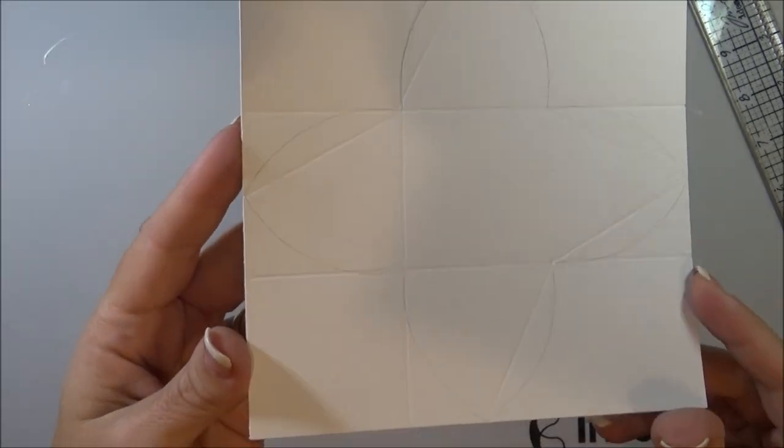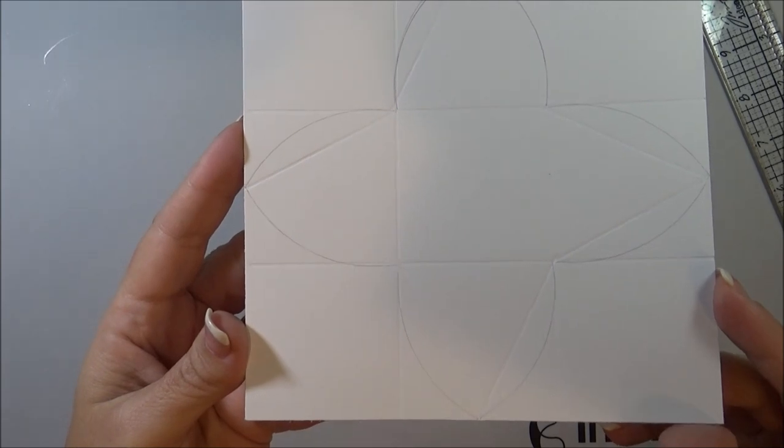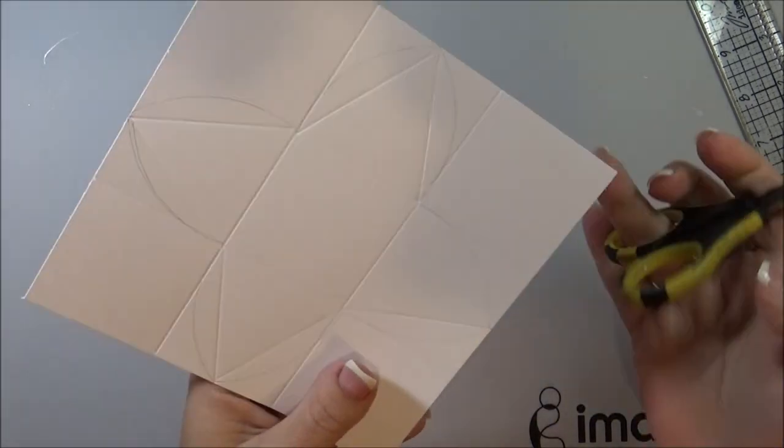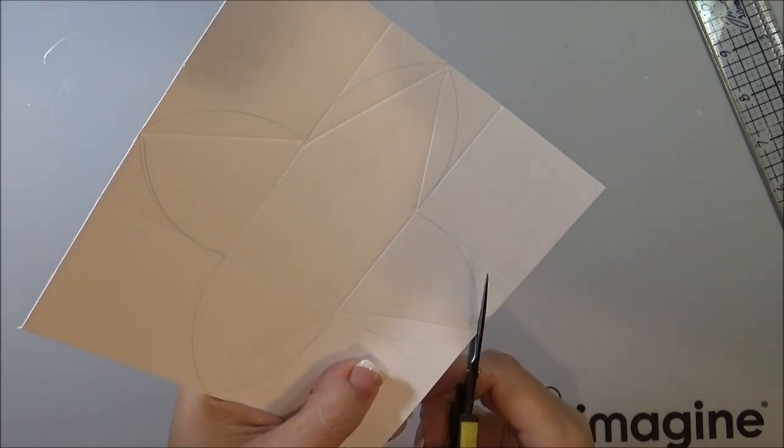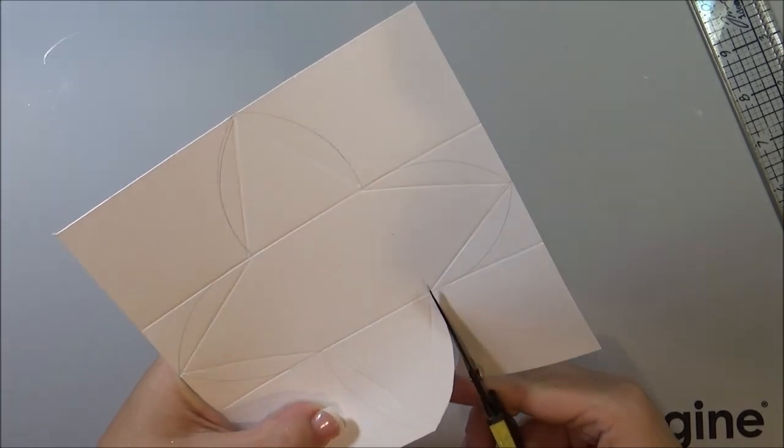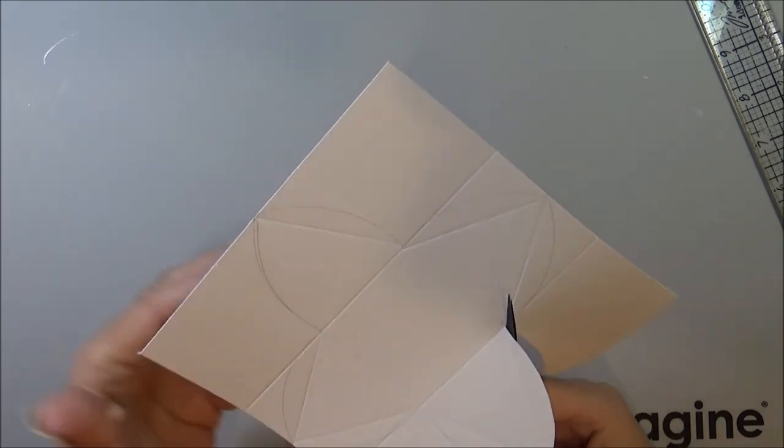There you go. So you see how that looks with each one, having a little half circle. And then I'm just going to take a pair of scissors and cut out right on the outside of each one of those lines that I just traced.